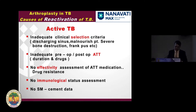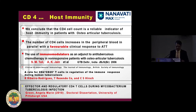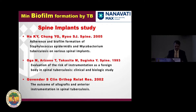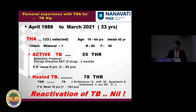Causes of reactivation include inadequate clinical selection criteria, inadequate anti-TB medication, no effectiveness assessment of anti-TB medication, and no immunological status assessment. CD4 count is a very good parameter — it gives a measure of host immunity. If you do THR in a patient with good immunity, it works better. There are also spine studies showing biofilm formation is less in TB. I have an extensive experience of 133 cases, with no active reactivation in any of them.